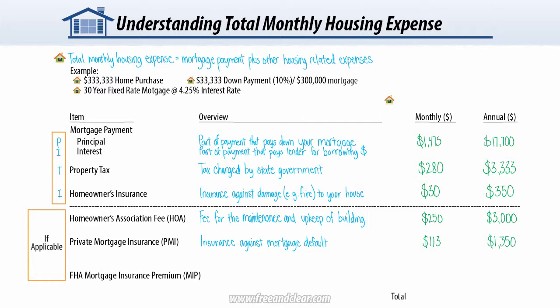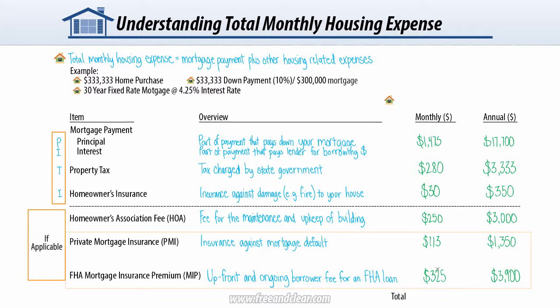The final component is Mortgage Insurance Premium, or MIP. If you obtain a mortgage through the FHA Home Loan Program, you're required to pay an upfront and ongoing annual mortgage insurance premium, which is an additional cost on top of your monthly mortgage payment. The FHA offers government-backed mortgage programs designed to help low-income individuals and those with limited funds buy a home, but the program requires the borrower to pay the extra MIP. The amount of ongoing MIP depends on mortgage amount, loan-to-value ratio, and mortgage term. In this example, if we obtained an FHA mortgage, our MIP would be $325 a month or $3,900 per year. Note that you would never have to pay both PMI and MIP — it would be one or the other, if applicable.